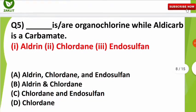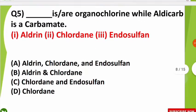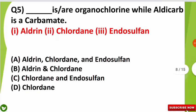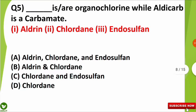The next question is: dash is or are organochlorine while LD carb is a carbamate. This is talking about pesticides, and the options are aldrin, chlordane, and endosulfan. Among these three, select the correct option.